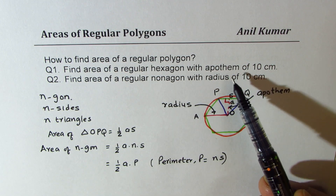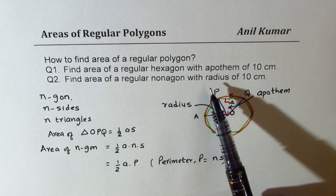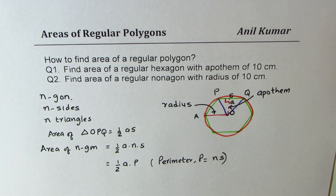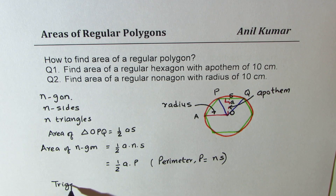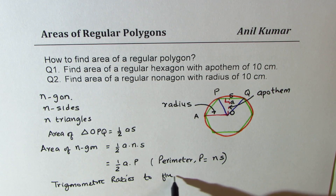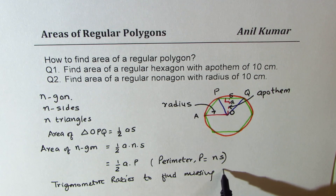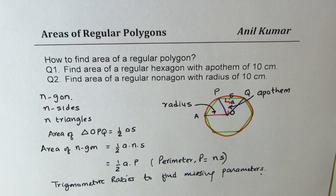For our two questions: one gives us the apothem of 10 cm, and the second gives us the radius of 10 cm. If we are only given the apothem, we need to use trigonometric ratios to find the missing parameters — specifically the side length — and once we do that, we can find the area. Let us take up these two examples to understand how to find the area of a regular polygon.